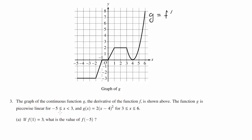The function g is piecewise linear from negative 4 to 3. So we have all of those lines from negative 5 all the way to 3. And from 3 to 6, we have a quadratic function — this parabola opening up.